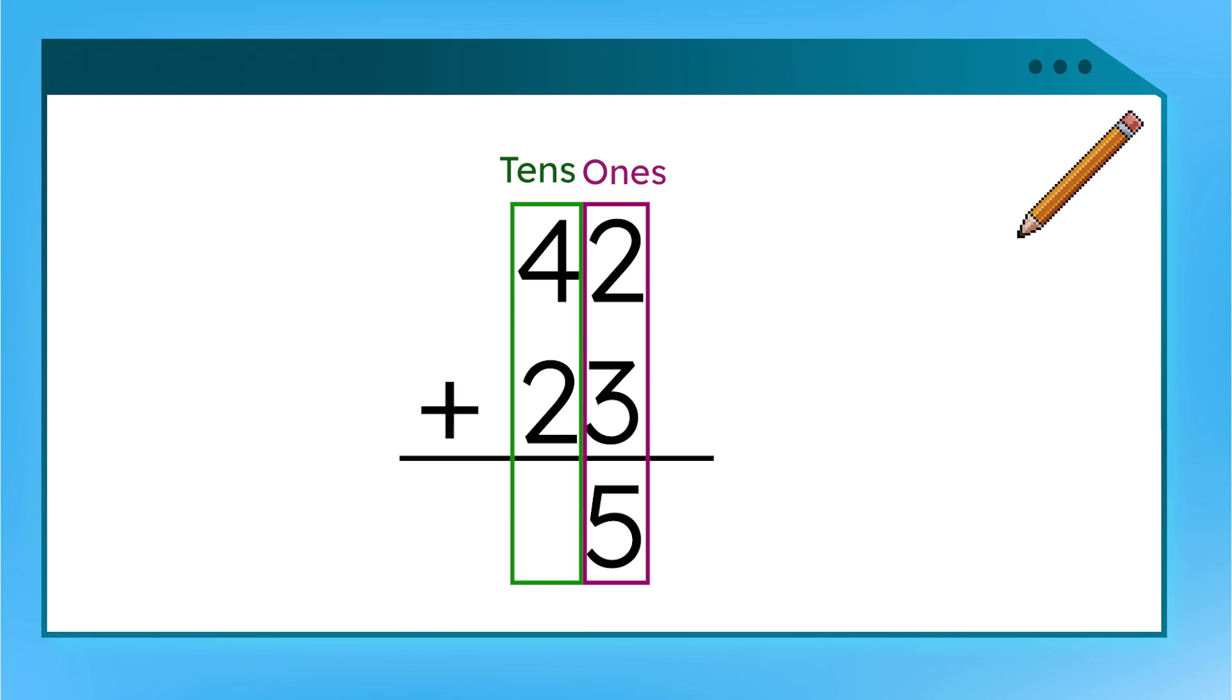What will we add next? Right! Our tens place. When we add 4 plus 2, we get 6. Let's write that below in our tens place. Our answer is 65. Wow, adding the single digits in each place value was much quicker and easier than tackling the whole number at once.